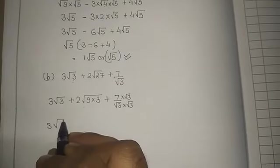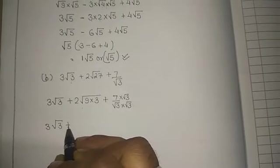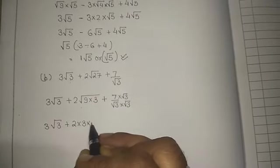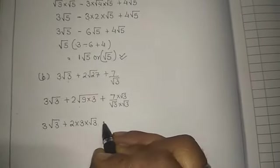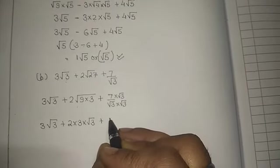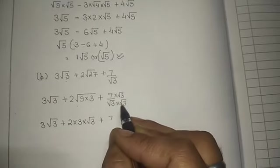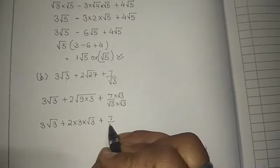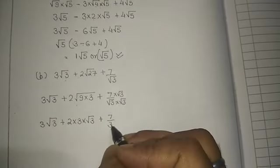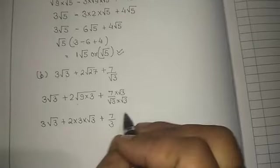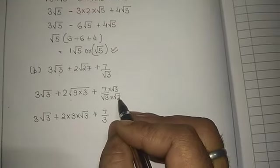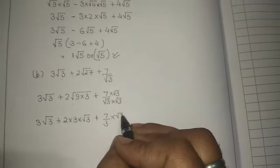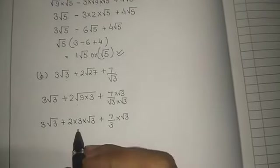So 3 under root 3 plus 2 multiplied by 3, multiplied by under root 3, plus here you will be 7. Now root 3 and root 3, these two will be 3. Why? Because square square under root cuts, so it means 3 into 3 means 9, 9 is the square of 3, and 7 will be multiplied by under root 3.